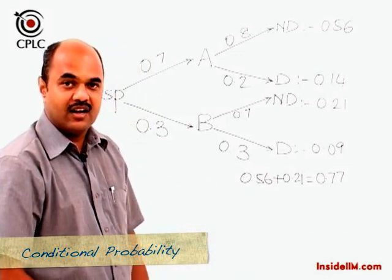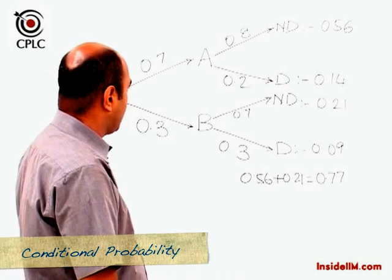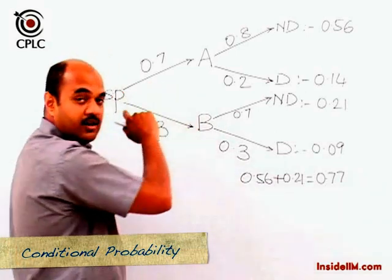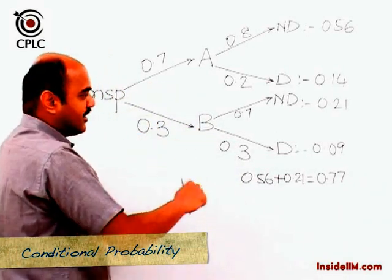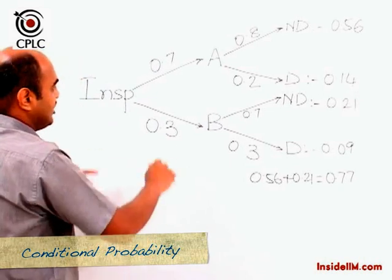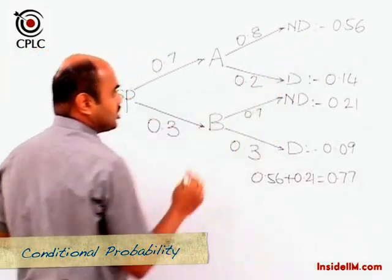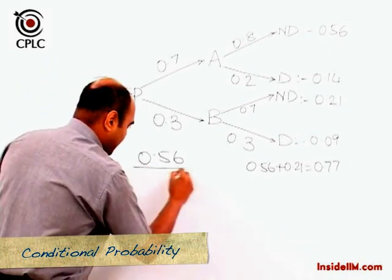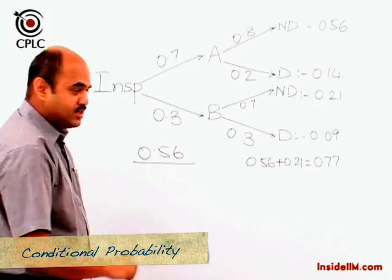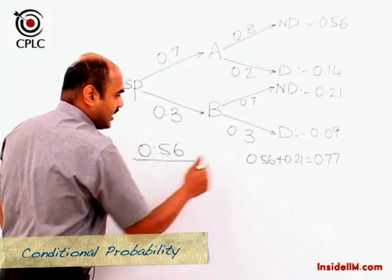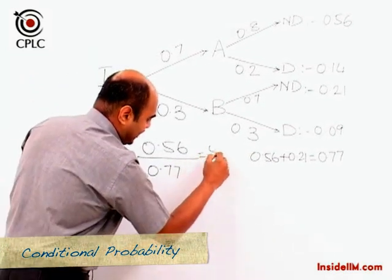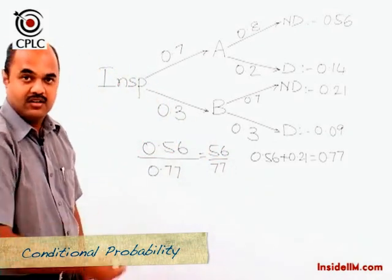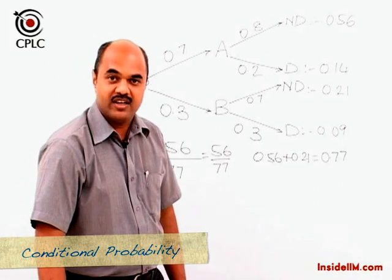Given that the article is non-defective, what is the probability that it was picked from machine A? We take the probability of non-defective and machine A — that is, 0.56 — divided by the probability that the article is non-defective, which we calculated as 0.77. Hence the answer is 56/77, which simplifies to 8/11.